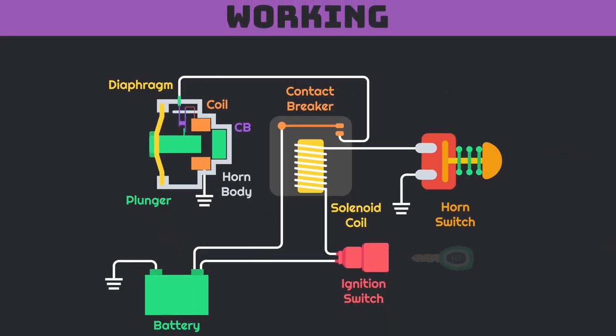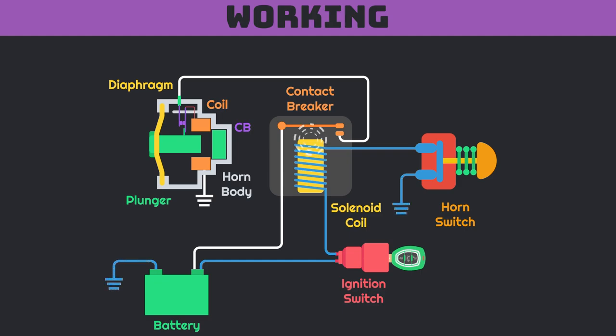When you turn the ignition switch on, the horn circuit completes and thus you can operate the horn. When you press the horn button, current from battery passes through ignition switch to the relay coil and advances to the horn switch. Due to completion of primary horn circuit, this causes the relay coil to get excited and close the contact breaker, which closes the high current circuit of the horn.